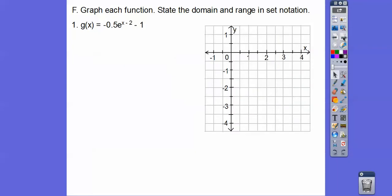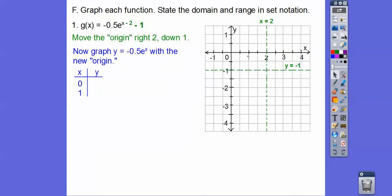All right, let's try this one. So negative 0.5e to the x minus 2. Now notice these are going by every 2 is 1, so that would be 0.5. That's 1. That's 1.5. Similarly, that's negative 0.5, negative 1. And we're doing that because of that right there. All right, let's move the origin right to down 1. Now we can graph without the 2 and the 1 for a moment and pretend that that's the origin, and we'll do 0 right here. e to the 0 is 1. 0.5 times 1 is 0.5, so we'll go 0 down a half right there.